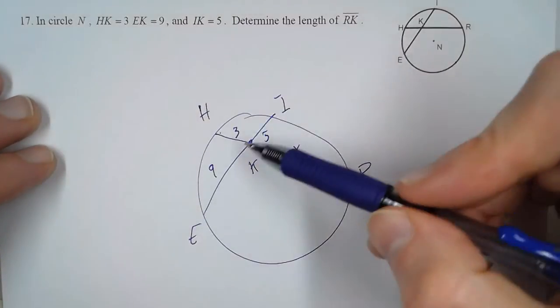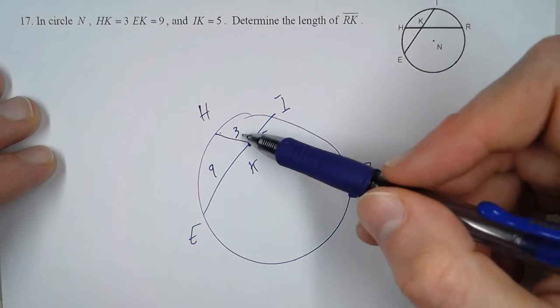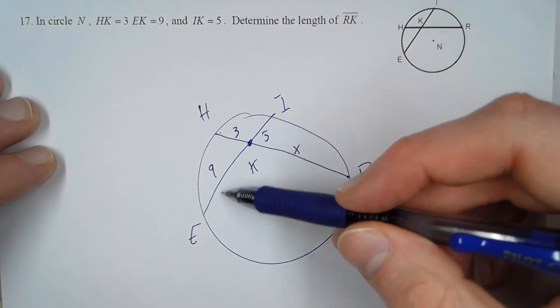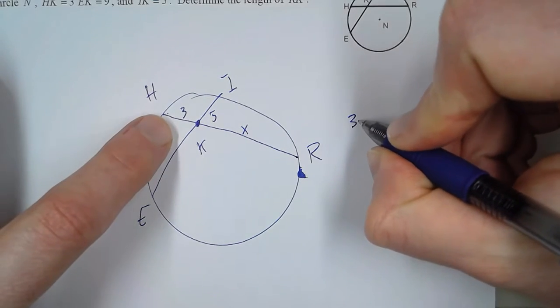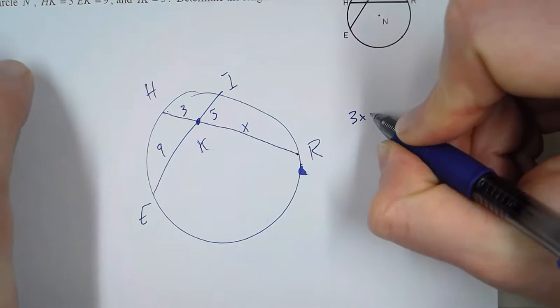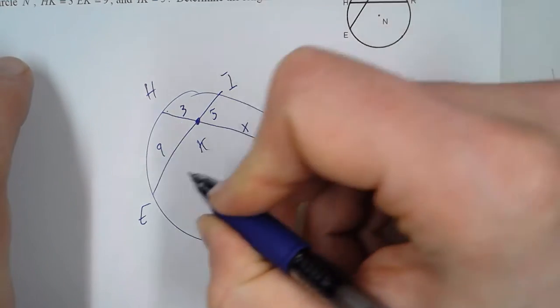The rule is that when they intersect each other, we take the two pieces and multiply them, and that product is equal. So 3 times X for this chord equals 9 times 5 for this chord.